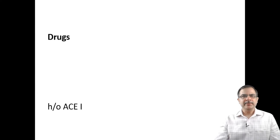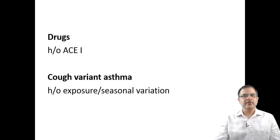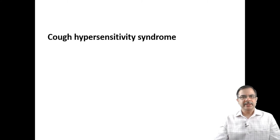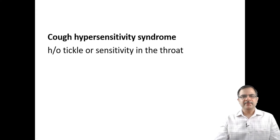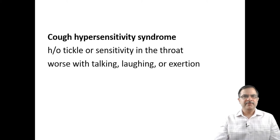With post-nasal drainage there is frequent throat clearing, and history of sneezing and rhinorrhea will be positive. For drugs, ACE inhibitors are antihypertensive agents that cause cough. For cough variant asthma, there will be a history of some exposure or seasonal variation. Cough hypersensitivity syndrome is like a neuropathy with increased sensory afferent activity; there will be a history of tickle or sensitivity in the throat, and the cough worsens with talking, laughing, or exertion.